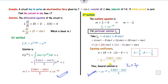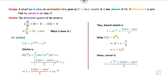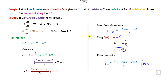Applying the initial condition I(0) = 0, substitute into the general solution to get C = 1/5. Substituting C = 1/5 gives the required current at any time t.